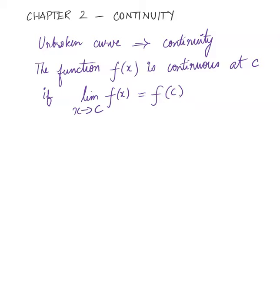Just like the limit situation, if your graph goes indefinitely on both ends, then you can have continuity at every point. But if your graph starts and ends, then you can have one-sided limits, and therefore there will also be one-sided continuity.